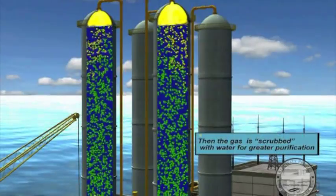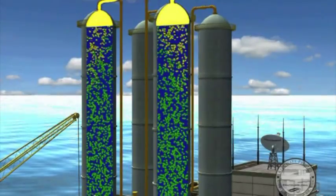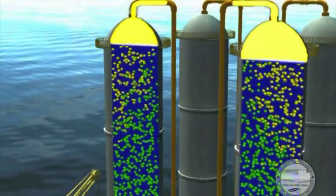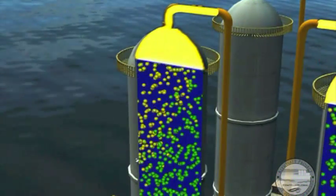As the gas leaves the wash tower, the carbon dioxide and hydrogen sulfide are removed, leaving high-quality methane gas, perfect for producing electric power.